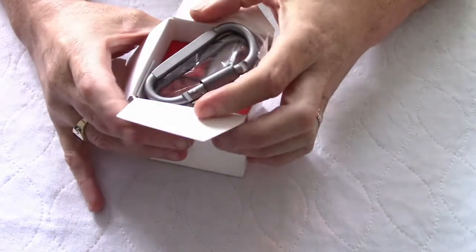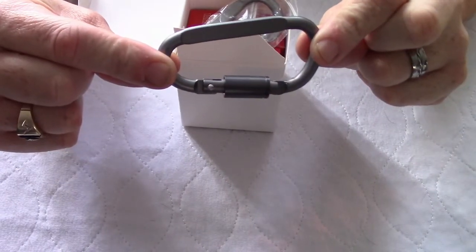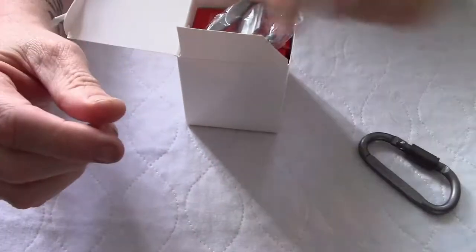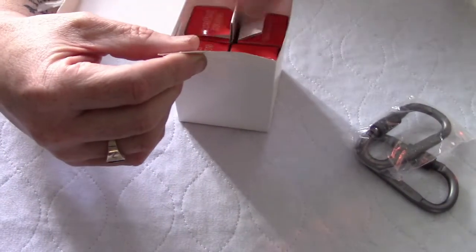So the first thing we're going to see is these carabiner style clips which you can use to attach to your belt or to a backpack. There's two of those provided. And then we'll move on to the actual lights themselves.